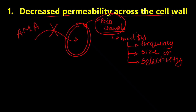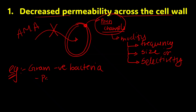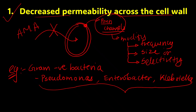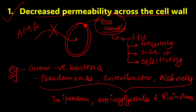This mechanism is mainly seen in some gram-negative bacteria. Examples include Pseudomonas, Enterobacter, and Klebsiella. These gram-negative bacteria demonstrate antimicrobial resistance through this mechanism against drugs like imipenem, aminoglycosides, and quinolones.